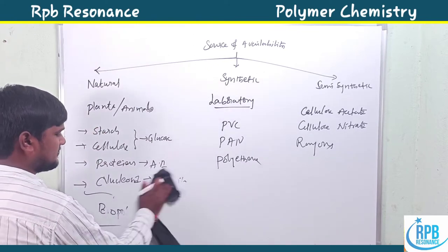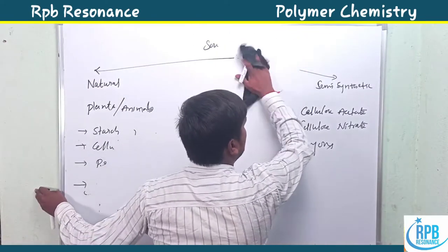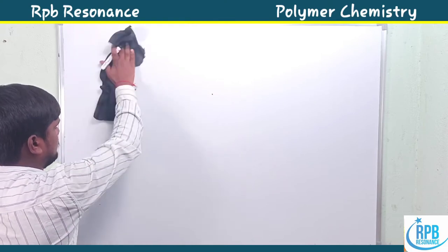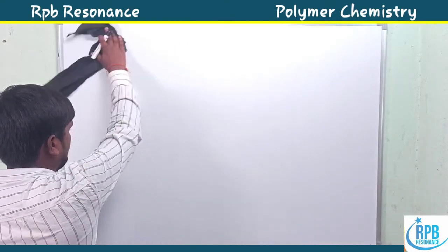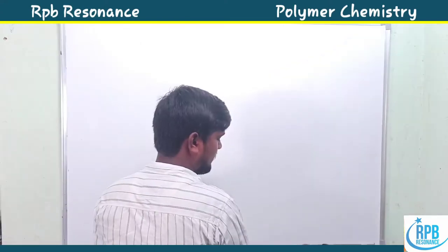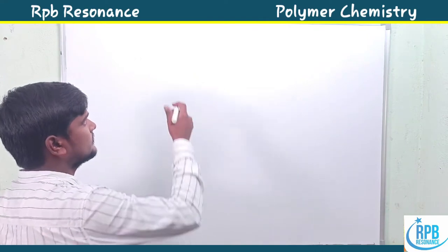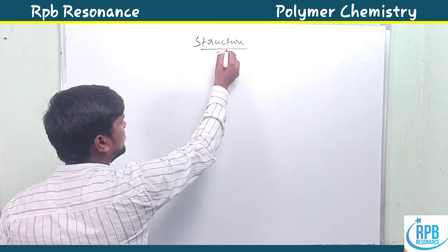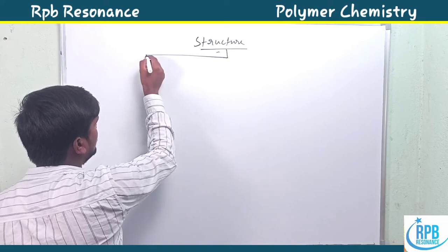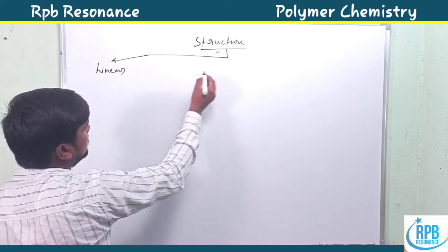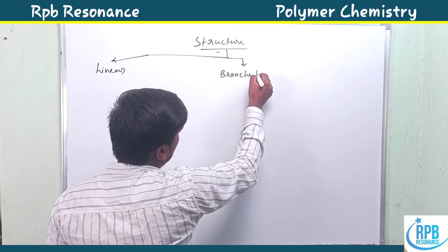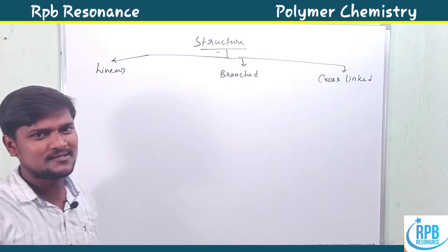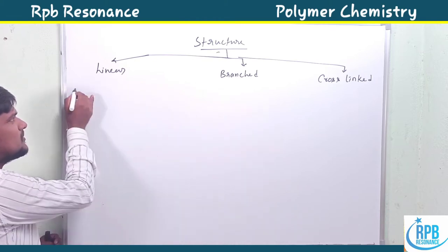To summarize the first classification: natural polymers come from natural sources like plants and animals; synthetic polymers are prepared in the laboratory; and semi-synthetic polymers result from chemical modification of natural polymers. Now let's move on to the second classification, which is based on structure, also classified into three types.